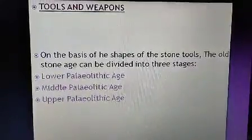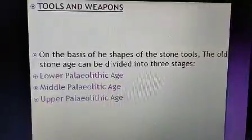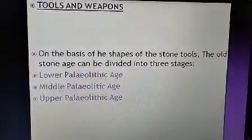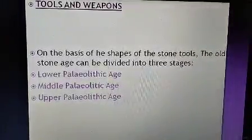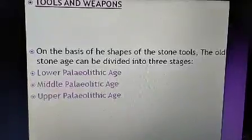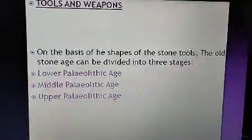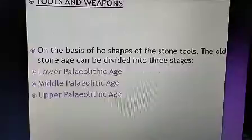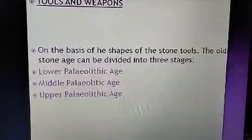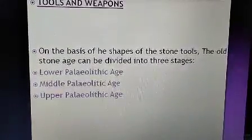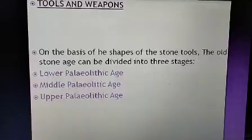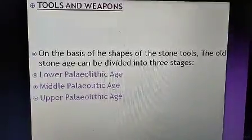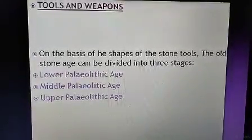Moving on to the next topic: tools and weapons. On the basis of the shapes of stone tools, the old stone age or paleolithic age can be divided into three stages — the lower paleolithic age, the middle paleolithic age, and the upper paleolithic age.